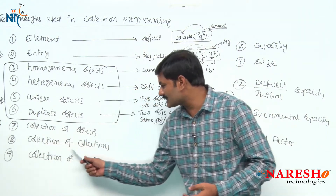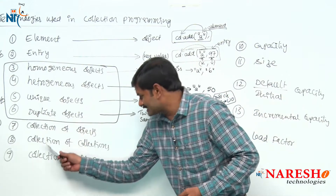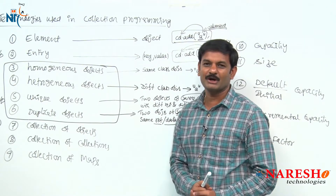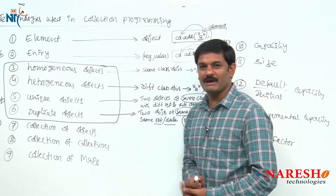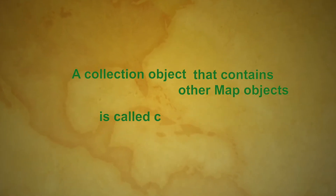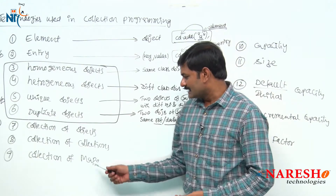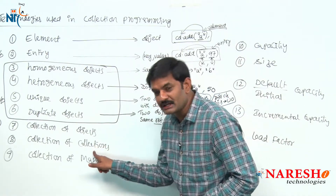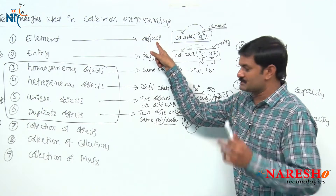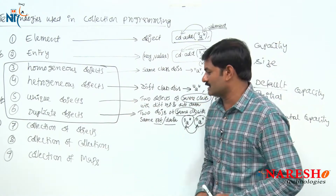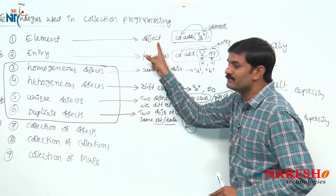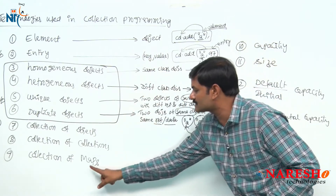Then what is a collection of collections? A collection object that contains other map objects is called collection of map objects. Now, there are two types of collections: collection-type collection and map-type collection. A collection that stores individual objects is called a collection. A collection object that stores key-value entries, not directly individual objects, is called a map.